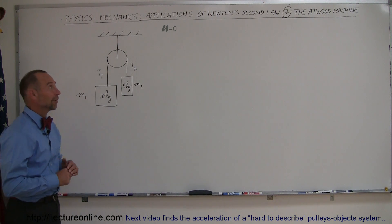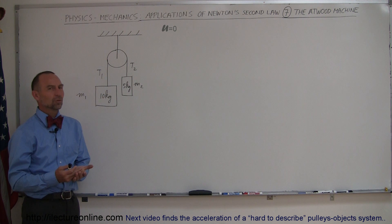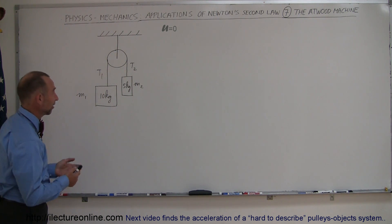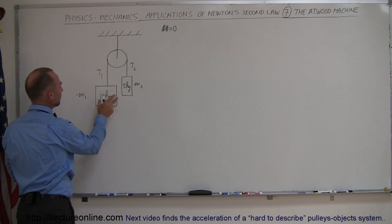Our next example of an application of Newton's second law is what we call the Atwood machine. In actuality it's just a simple pulley. And here we have a pulley, one string, two masses connected to it, one bigger than the other,